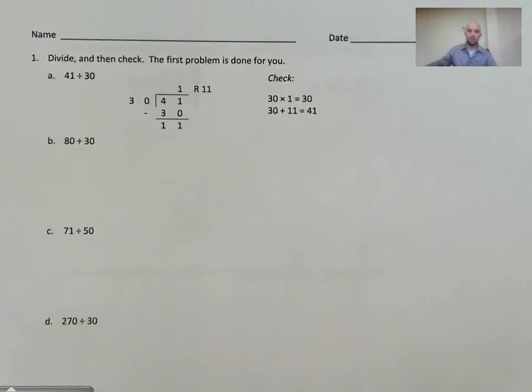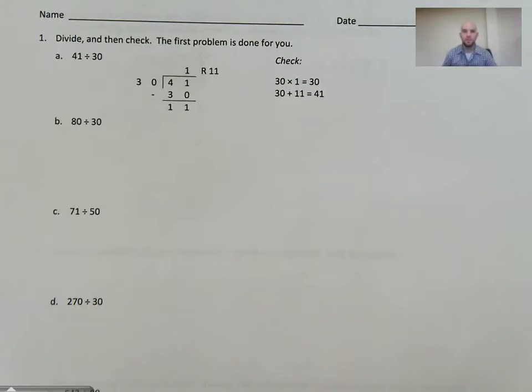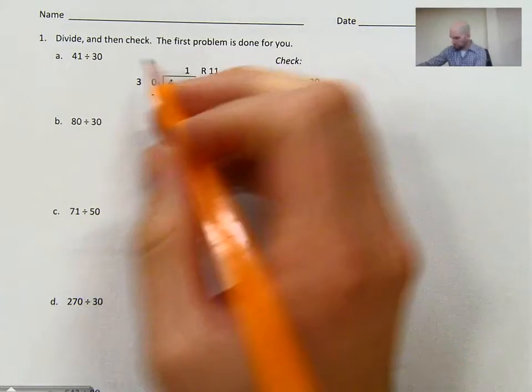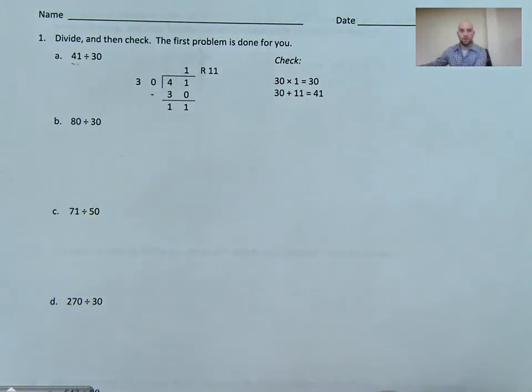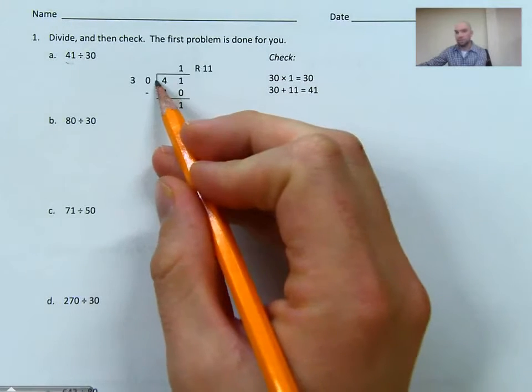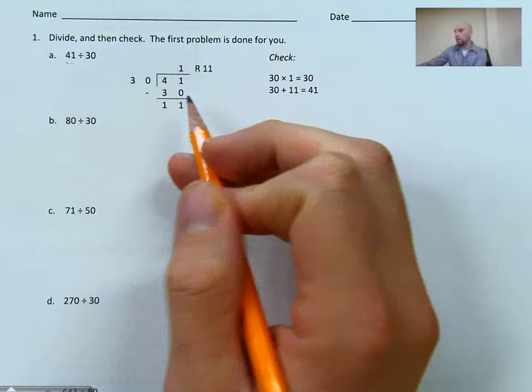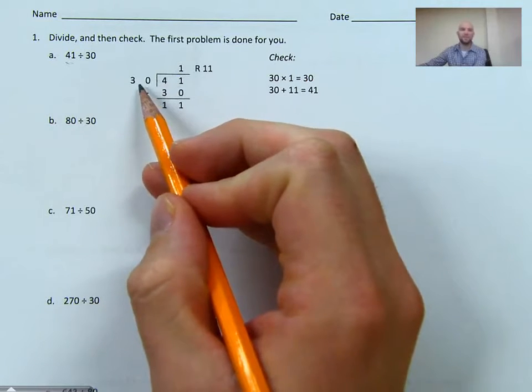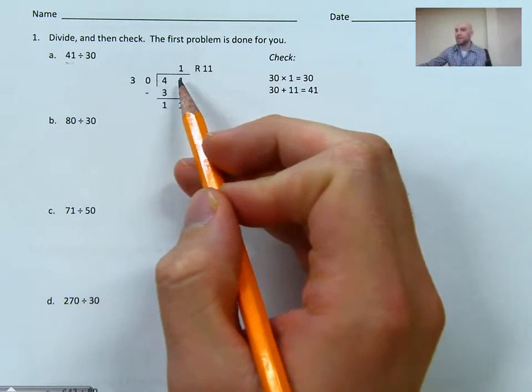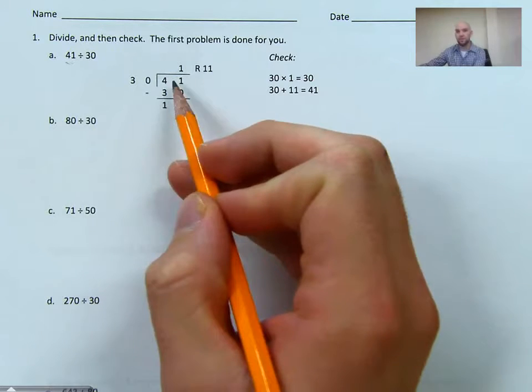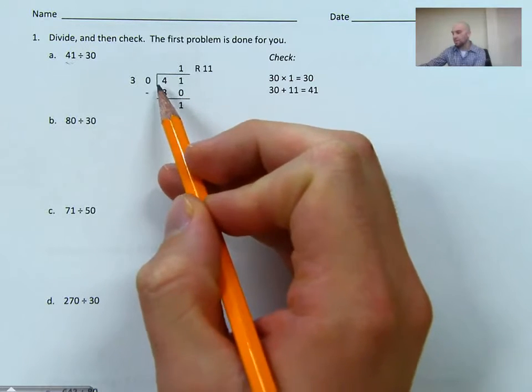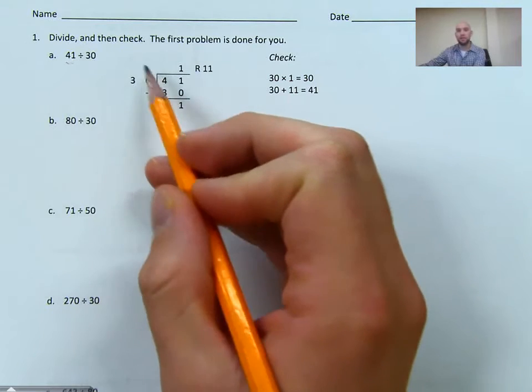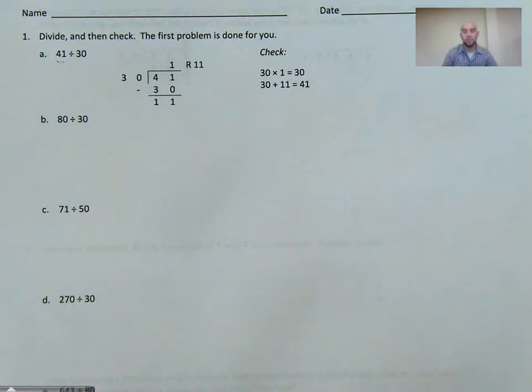If we look at our first problem here, it's done for us. It's 41 divided by 30. One thing that's really important that we want to make sure we're doing as we're solving these division problems is this first number, 41 divided by 30, I want to make sure this goes inside of our box, inside of our little house here. Some people will read this as 30 divided by 41, and that's incorrect. This is 41 divided by 30. So make sure that second number is the one that's outside of the box. So just be mindful of that as we continue.